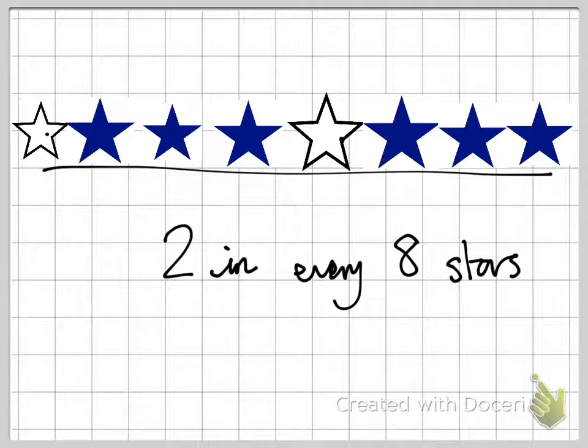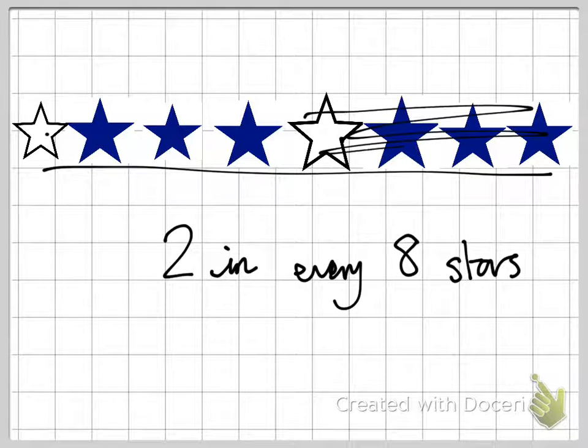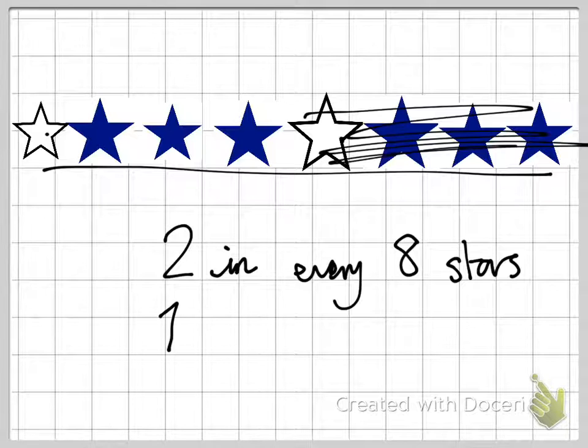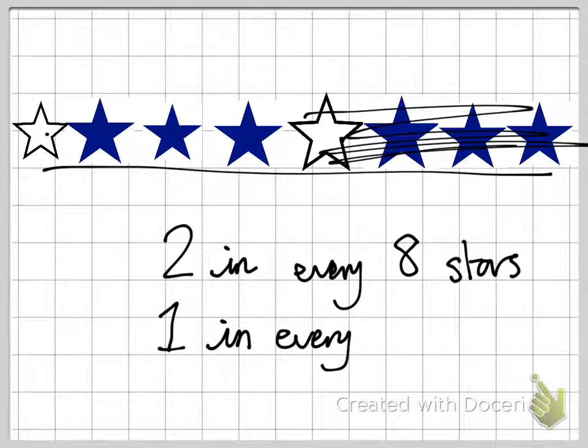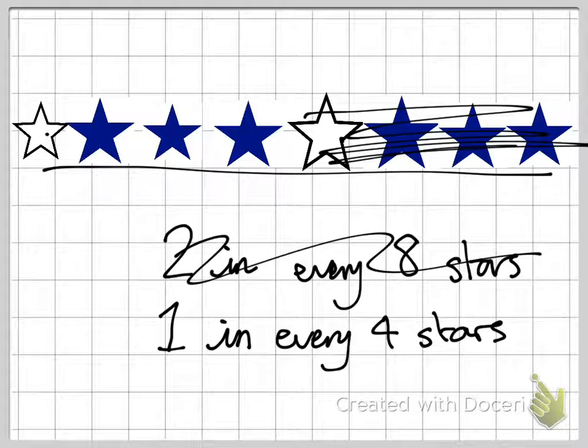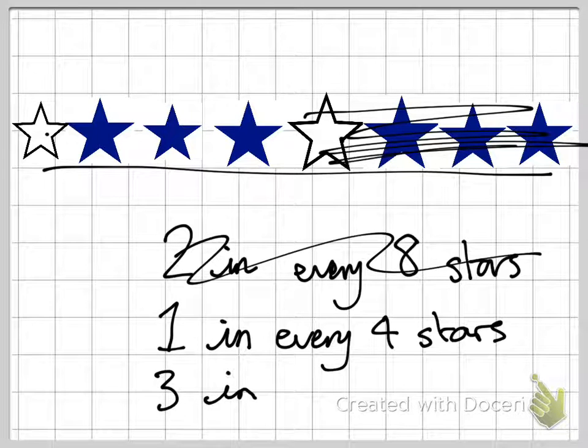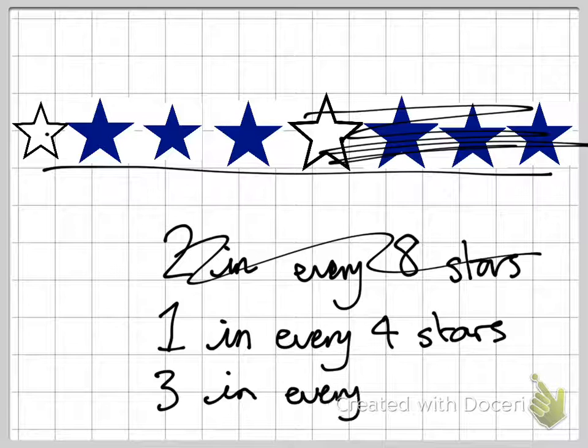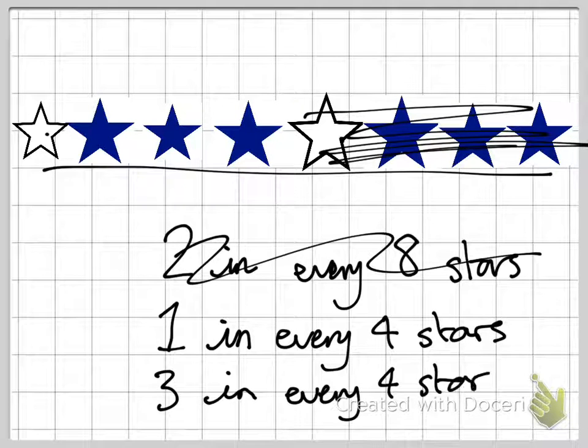Now, just as in ratio and in fractions, we should simplify when we can. So because this pattern repeats 1 white star, 3 blue stars, 1 white star, 3 blue stars, I can actually ignore this bit here and simplify this to say 1 in every 4 stars are white. And I could also say that 3 in every 4 stars are blue.